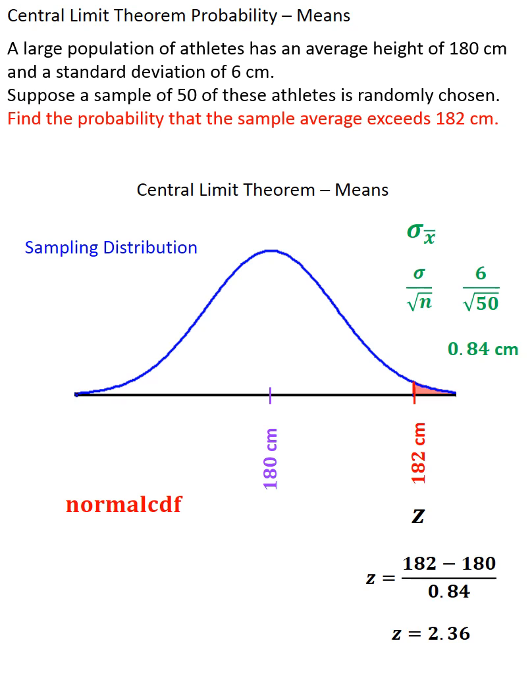And since that red shaded area goes from a z-score of 2.36 all the way forever to the right, I'm going to use 2.36 as my lower limit and infinity as my upper limit on whatever technology you're using. And using normal cumulative distribution function with these limits gives us the exact probability that we're looking for, 0.009.